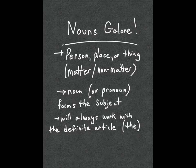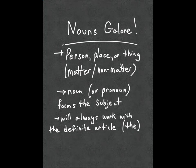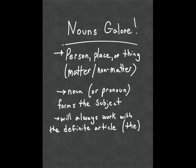What is a noun? It's a person, place, or thing, and this thing can be matter or non-matter. A noun or pronoun will form the subject in a sentence, so they are important to spot. Just a side note: if you're not sure whether a word is acting as a noun, one way to test it is — can you put the definite article "the" in front of it? If you can say "the article," then you know you've got a noun.